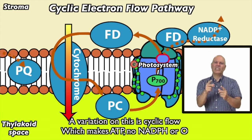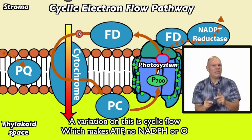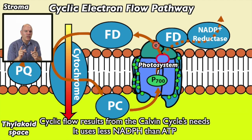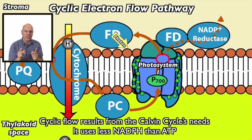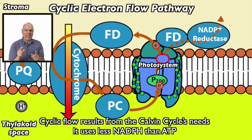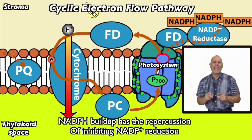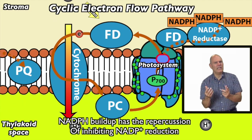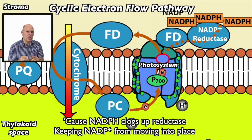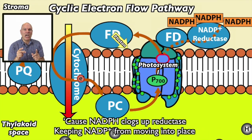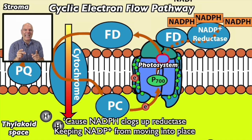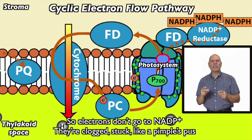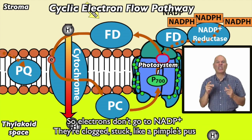A variation on this is cyclic flow, which makes ATP — no NADPH or O2. Cyclic flow results from the Calvin cycle's needs when it uses less NADPH than ATP. NADPH buildup has the repercussion of inhibiting NADP+ reduction, because NADPH clogs up reductase, keeping NADP+ from moving into place. So electrons don't go to NADP+.